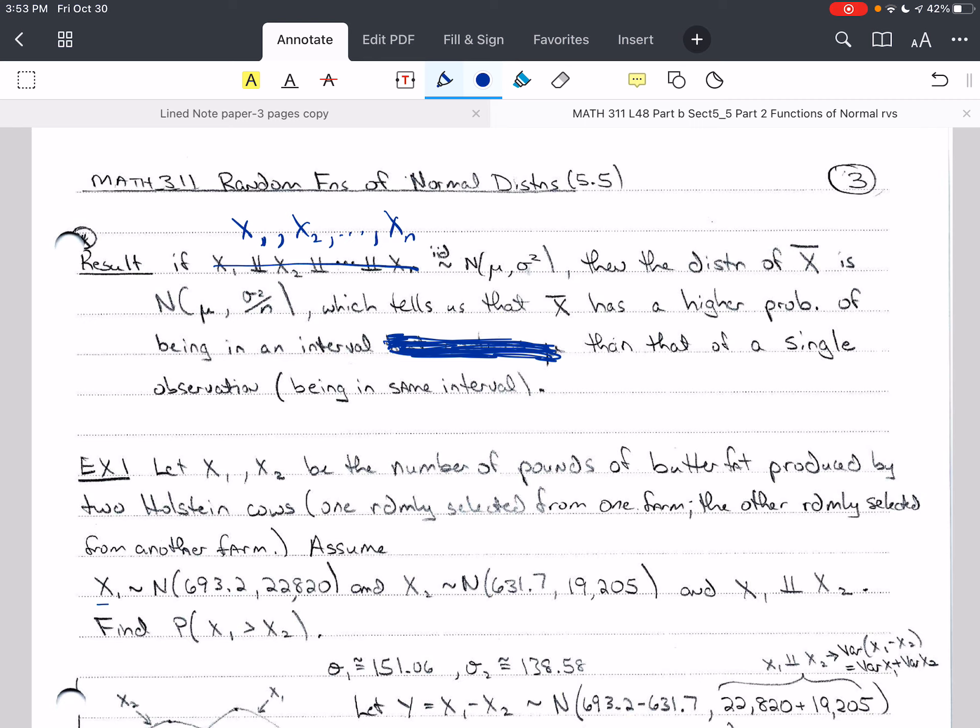Then the distribution of x-bar is given by normal distribution with mean μ, variance σ² over n. And this tells us that x-bar has a higher probability of being in an interval than x does in the same interval because the variance of x is σ², and the variance of x-bar is σ² divided by n, which makes it smaller.